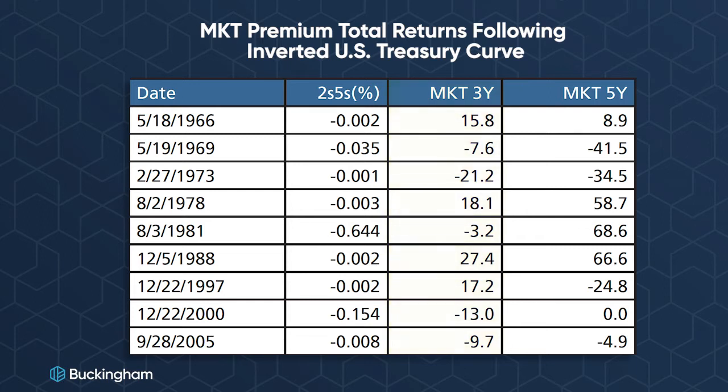For the five years after a yield curve inverts, the average outperformance for stocks relative to treasury bills is about 10.8%. But it's worth noting that we did see a very wide range of outcomes in that five-year stretch of time.